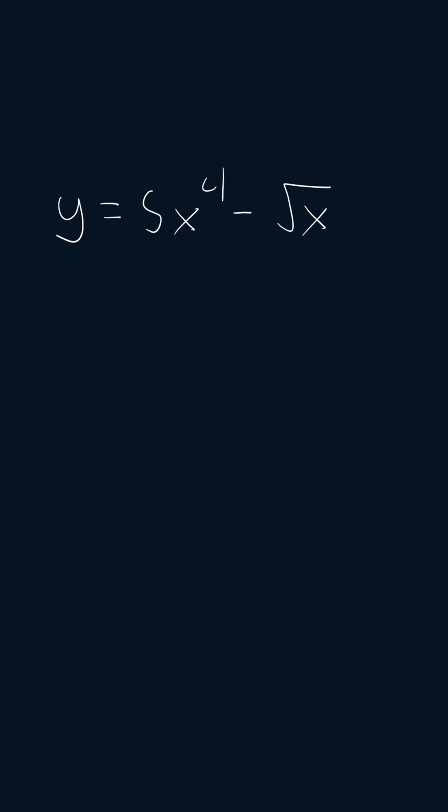So we're going to begin by applying the sum and differences rule. We're going to get the derivative of 5x to the power of 4 minus the derivative of the square root of x.